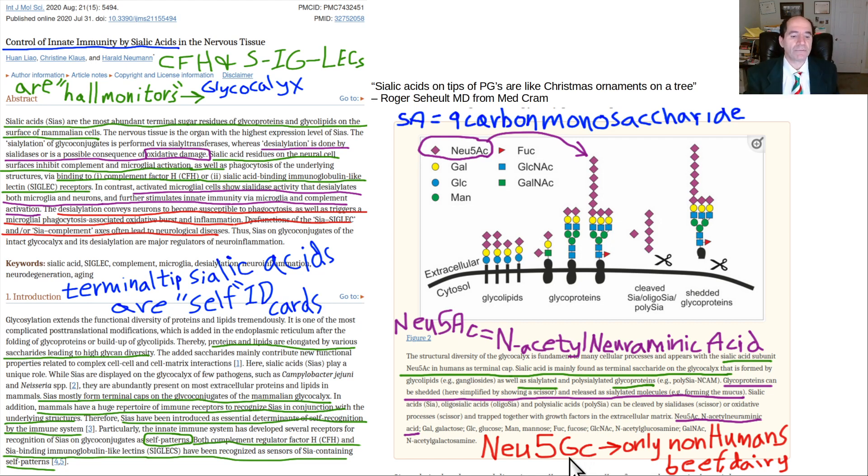Our gut cells will absorb this Neu5GC and even incorporate it into human tissues in multiple locations in the body. That's a problem because later the immune system comes along and says 'why is there Neu5GC? Humans can't make that.' Once the immune system recognizes this, it causes an inflammatory reaction, potentially killing the cell. This causes autoimmune disease.